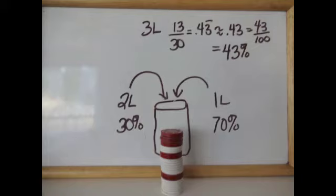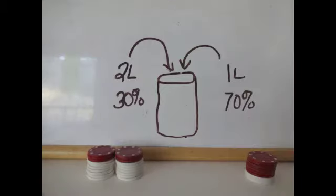13 divided by 30 is 0.4333 on forever. That gives us a repeating decimal, so we're going to round it to 0.43. That's 43 hundredths. 43 out of 100, and that's 43 percent. Closer to 30, and in between 30 percent and 70 percent.